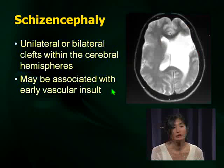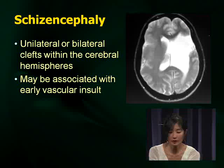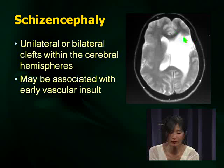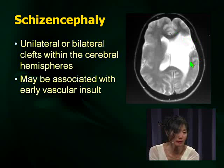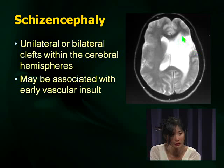Schizencephaly is another thing we see relatively commonly within neurology. If you look here, you see a cleft. Around the edges, you actually have gray matter — it's a developmental abnormality and a cleft in the cerebral hemisphere. You can have unilateral or bilateral. It may be associated with an early vascular insult, because this follows a pattern tracing the territory of the middle cerebral artery. Just remember you can have unilateral or bilateral clefts with schizencephaly.